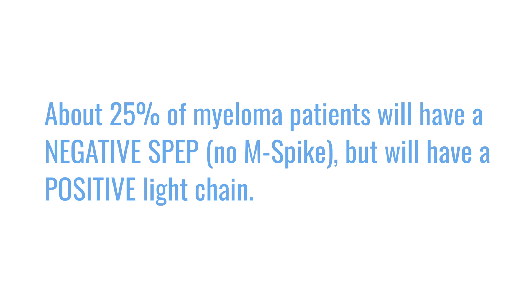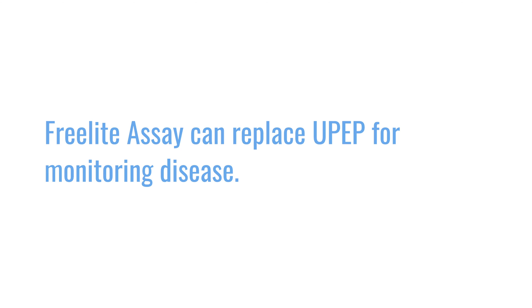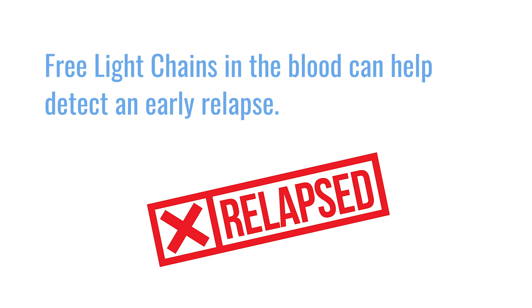About 25 to 30 percent of patients are going to have a negative SPEP and a negative M-spike on regular SPEP and immunofixation, but will have a positive light chain result. If we overlook that, by the time the patient comes to us they'll have end organ damage and significant disease. The serum free light chain test can replace the UPEP for day-to-day monitoring, and it can also hint at an early relapse before it appears on an SPEP.